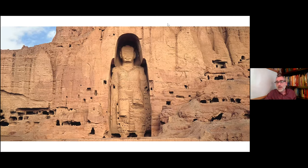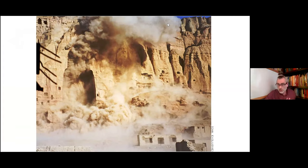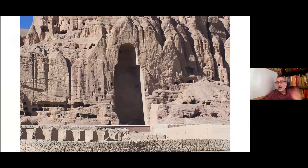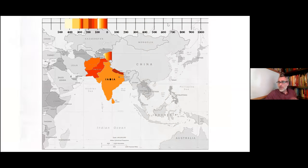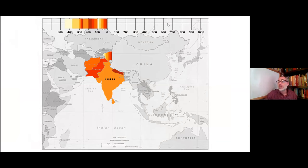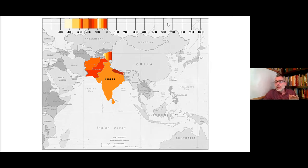Unfortunately, the giant Buddha of Bamiyan was blown up by the Taliban in 2001. This is what it looks like today — just the empty relief remaining. So that's our overview of the Kush Valley hotspot. The oldest known images of the Buddha are from Afghanistan, and some are borderline Christian, definitely borderline Hellenistic with the togas — some of the oldest Buddhist imagery in the world.